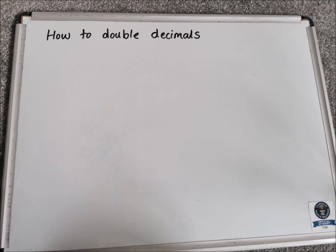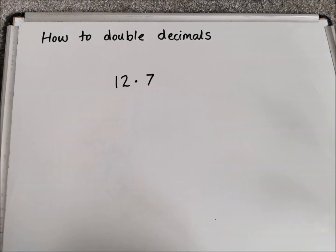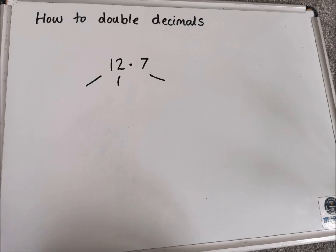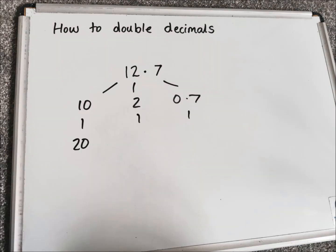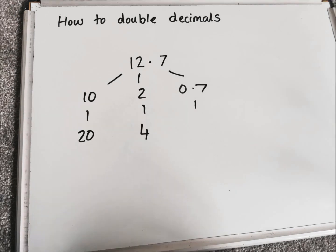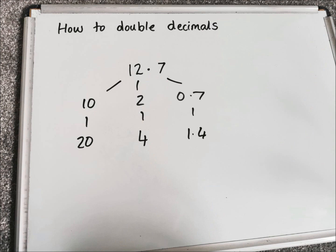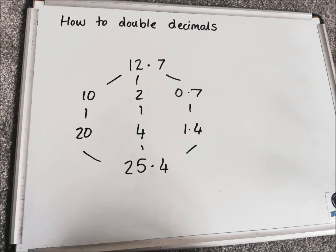The last example is how to double with decimals. Imagine we had 12.7. We can partition each section just as we would for two-digit and three-digit numbers, giving us 10, 2, and 0.7. Be careful with those decimals — 0.7 at the end. Double 10 is 20, double 2 is 4, and double 0.7 is 1.4, since double 7 is 14. Bringing those sections together: 20 + 4 + 1.4 = 25.4.